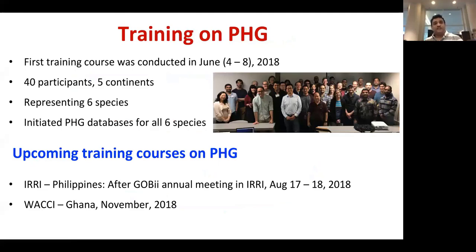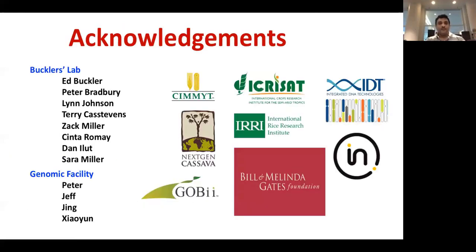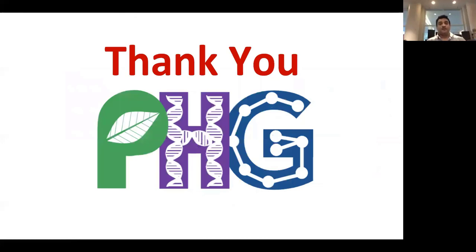Coming to training: last week we finished the first training course with 40 participants from five continents representing six species, and we initiated the PHG for all six species. Upcoming PHG training courses: one in Ithaca immediately after the GOBII annual meeting, around the 17th and 18th — anyone interested can contact me or Lisa. The next training program will be in Ghana, Accra, in November. I'd like to acknowledge all our Buckler lab people, the genomic diversity facility, all collaborators, and the Bill and Melinda Gates Foundation for funding support.